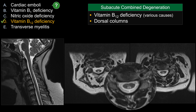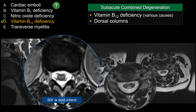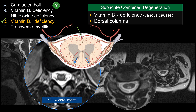Looking at the answer choices that don't work: choice A refers to cord infarction. The cord is supplied anteriorly by a single anterior spinal artery and posteriorly by paired posterior spinal arteries. The vast majority of cord infarctions involve the anterior spinal artery. Therefore, the classic appearance is involvement of the anterior cord, often central and bilateral — giving that classic owl's eye appearance. Posterior spinal artery involvement is far less common and typically presents as unilateral, not bilateral involvement as in our case. So choice A is not the best answer.